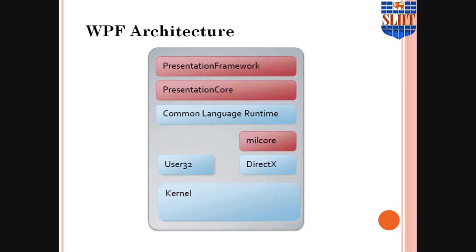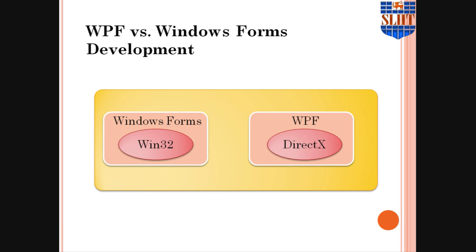The red section of the diagram — the presentation framework, presentation core, and mill core — are the major core portions of WPF. Of these, only one is an unmanaged component: the mill core. Mill core is written in unmanaged code in order to enable tight integration with DirectX. All display in WPF is done through the DirectX engine, allowing for efficient hardware and software rendering.